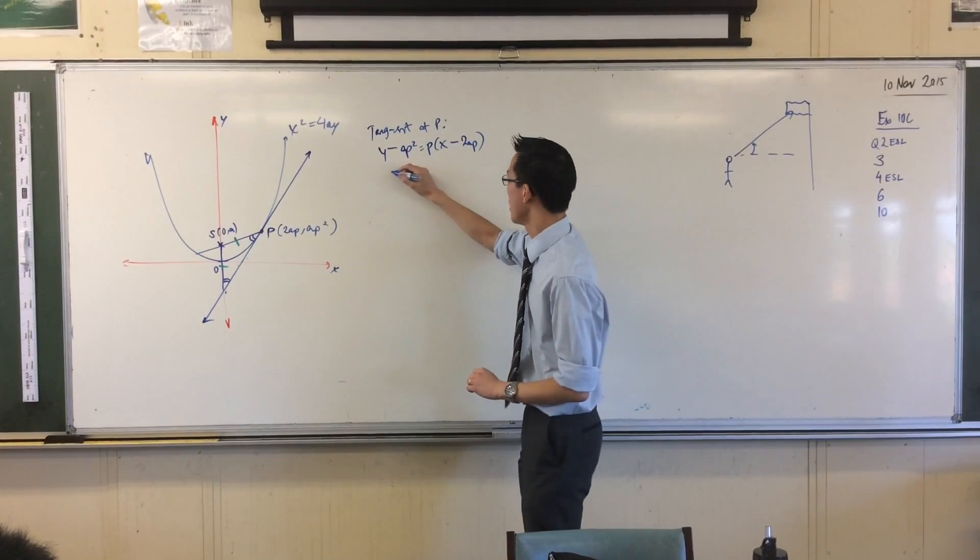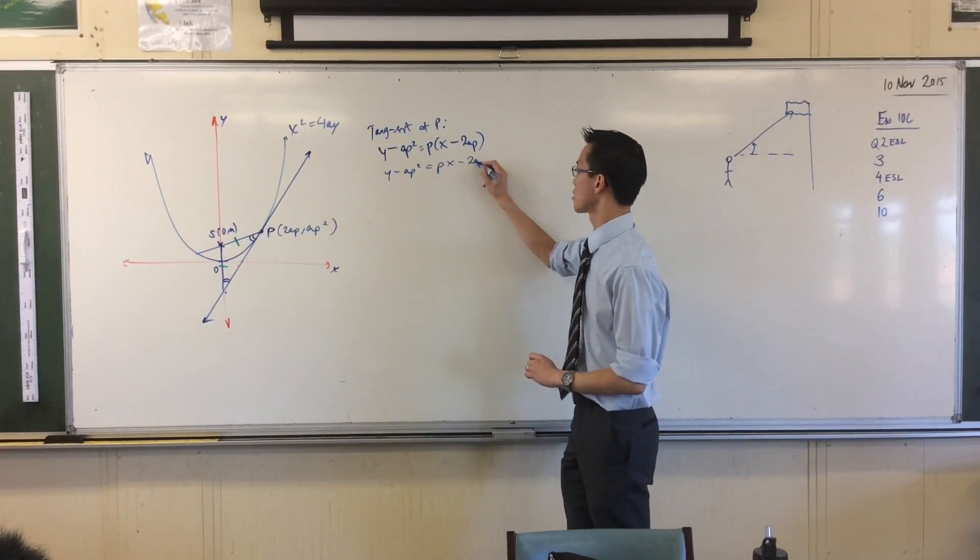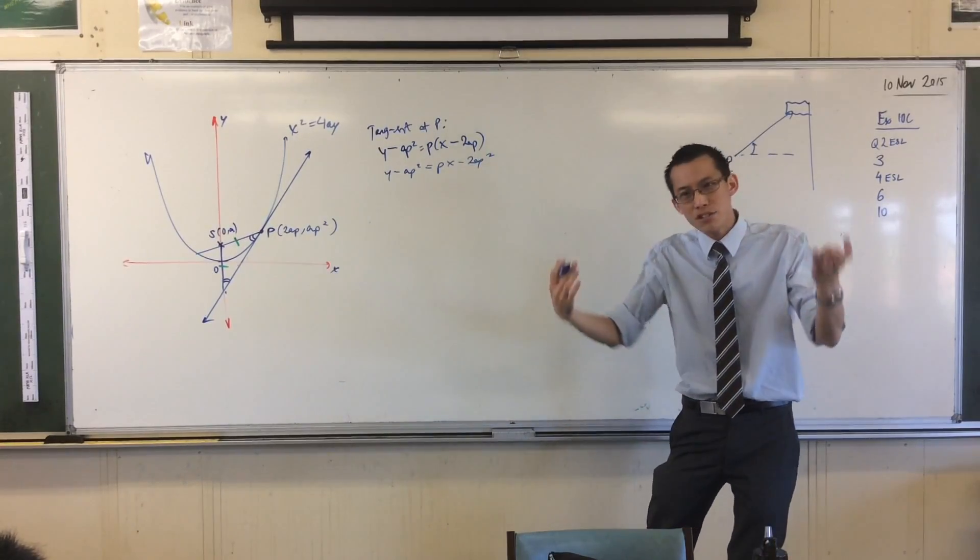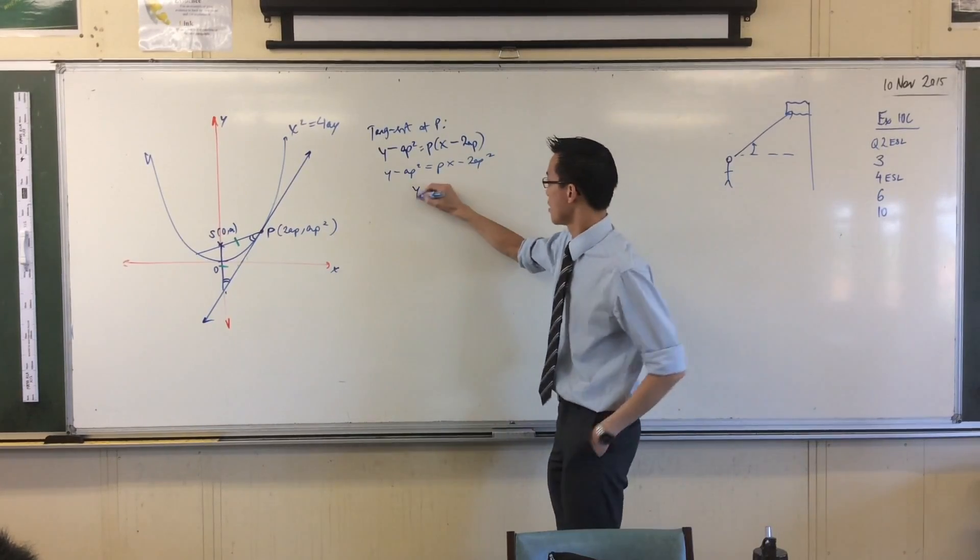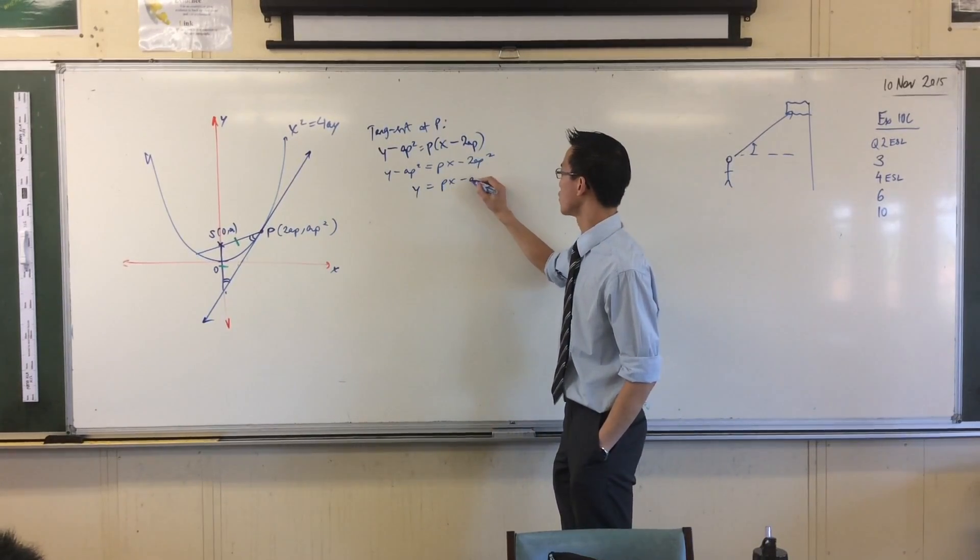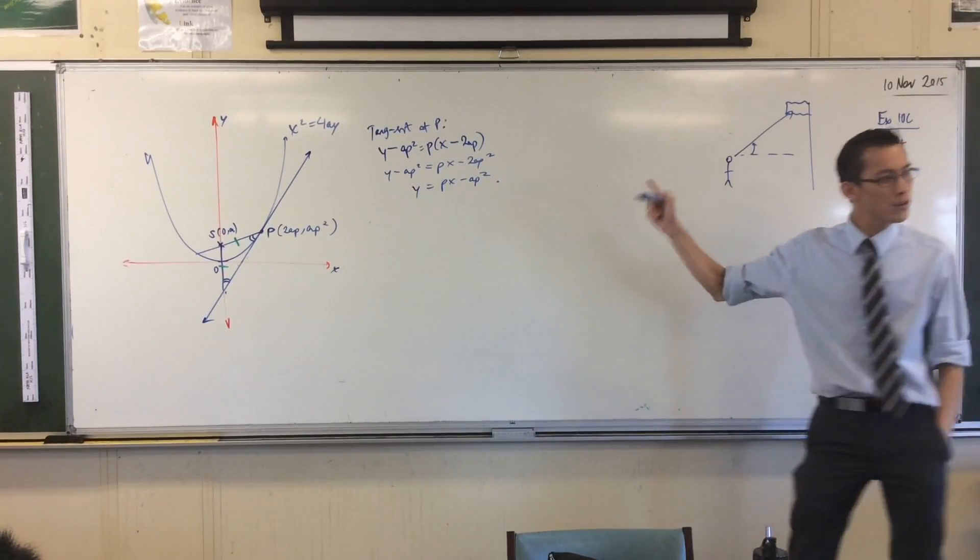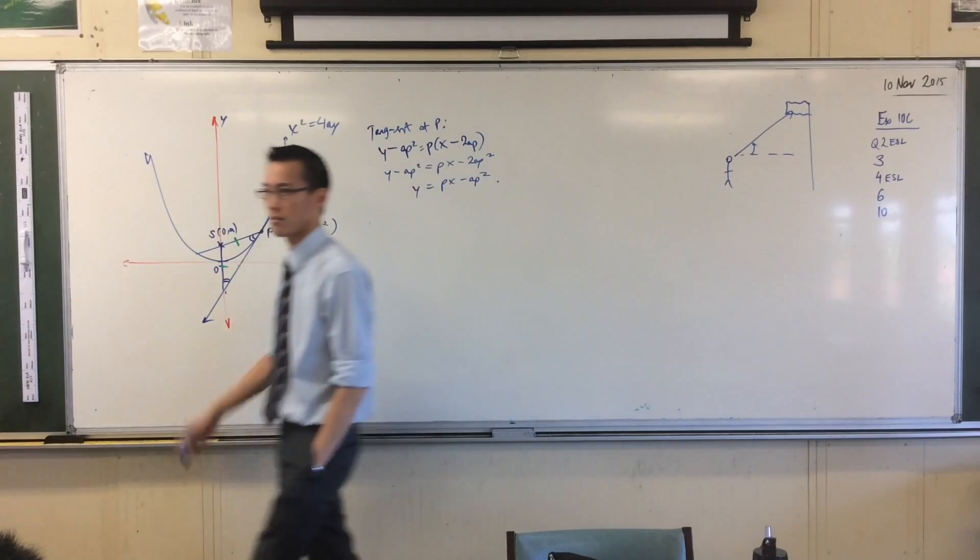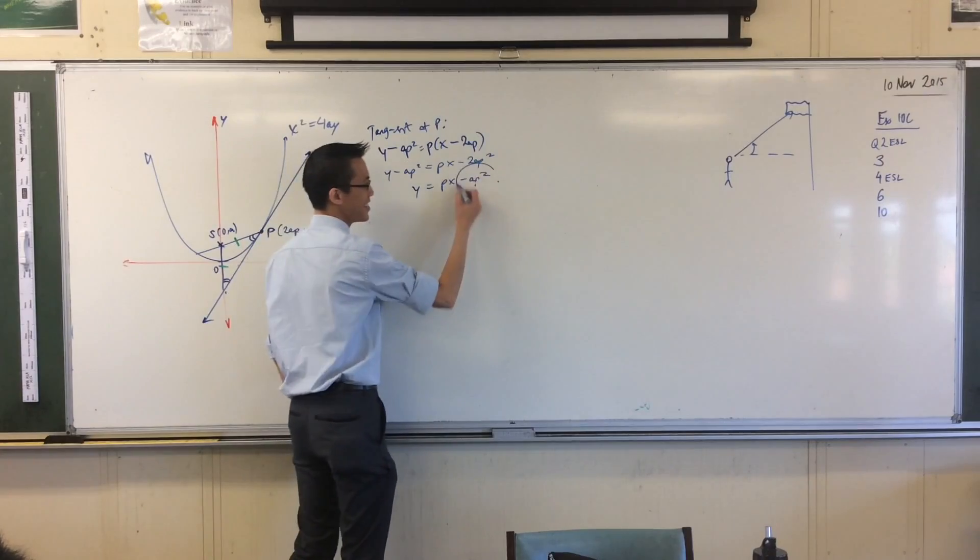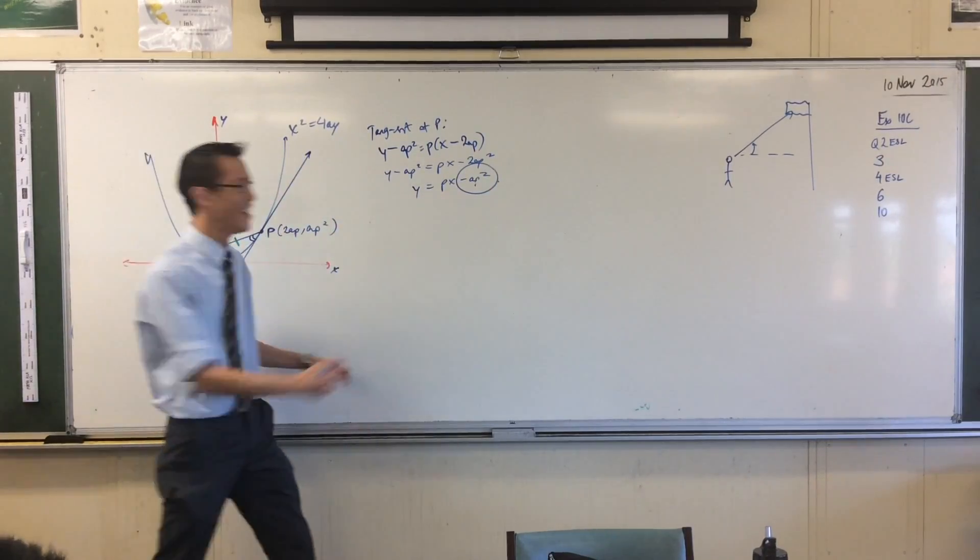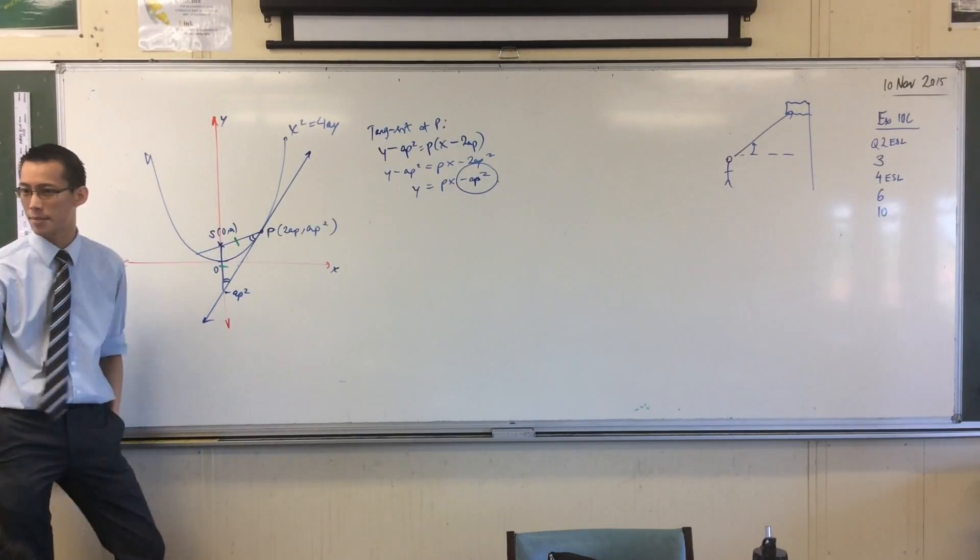Add to both sides and that gives you that, and you're like, oh yeah, that's the thing I was expecting. So fast, good. How do I use that to find this? It's in mx plus c form. Isn't mx plus c form so awesome? You just read off minus ap squared. That's the intercept down there.